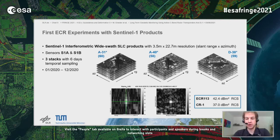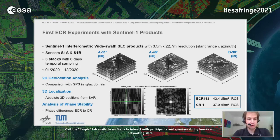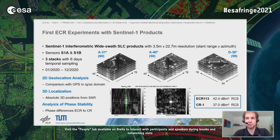For the analysis, we looked at three different topics: geolocation analysis, 3D absolute positioning using SAR range and azimuth data, and a quick experiment on phase stability with the one-year dataset.